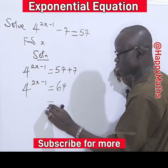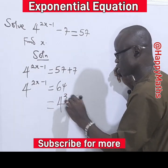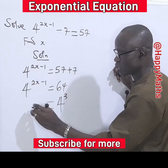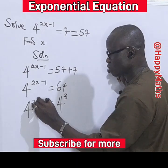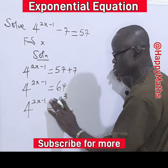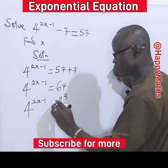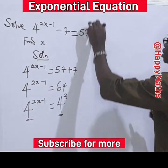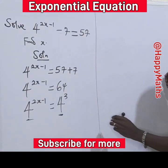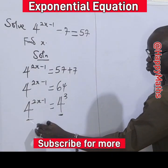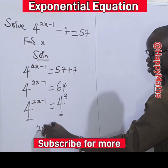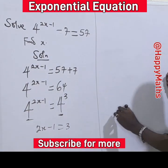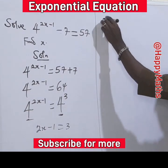Now let's express 64 in base 4: 4 times 4 is 16, times 4 gives us 64, which is 4 to the power of 3. So we have 4 raised to the power of 2s minus 1 equals 4 raised to the power of 3. Since the bases are the same, we equate the powers: 2s minus 1 equals 3.